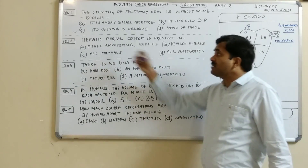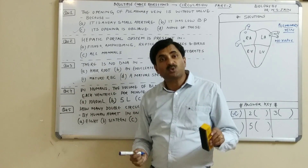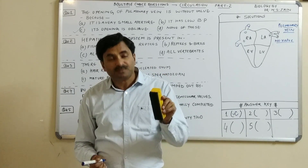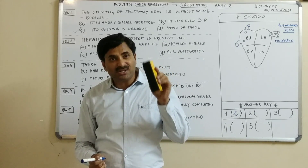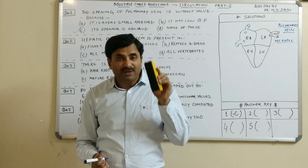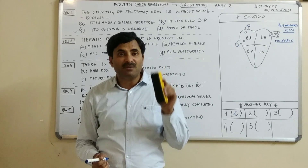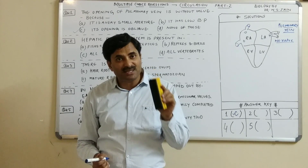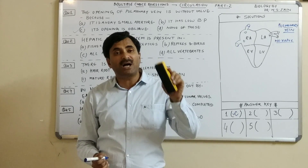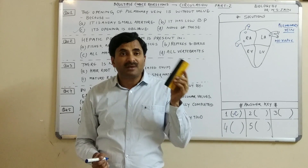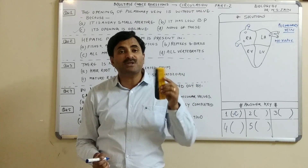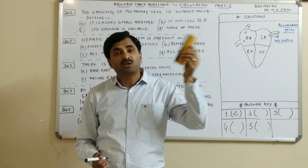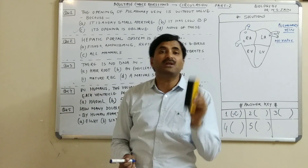Question number two: the hepatic portal system is present in which group? The hepatic portal system is a venous system where veins coming from the intestine and stomach do not open directly into the heart. Because they contain certain toxic substances, they first open into the liver so that detoxification — removal of toxic substances — can occur, and ultimately they open into the heart.